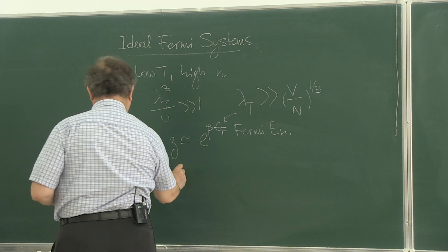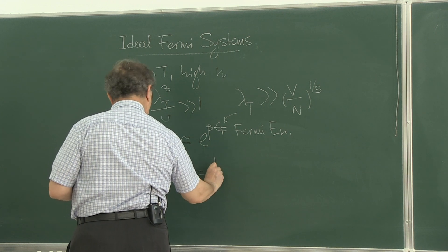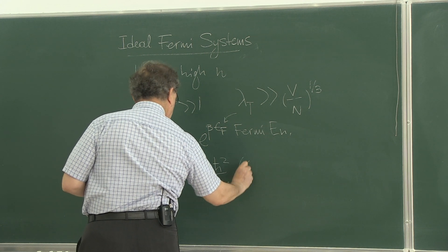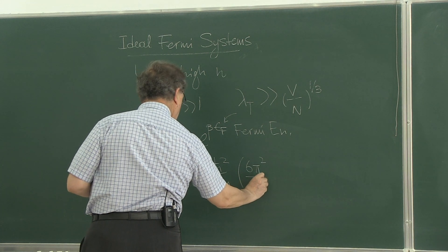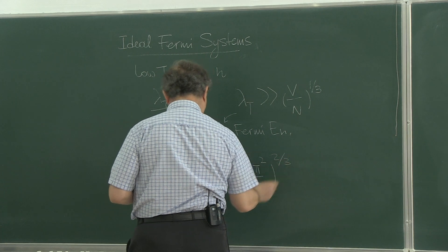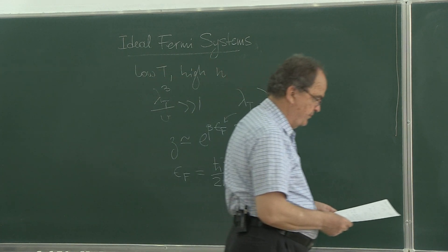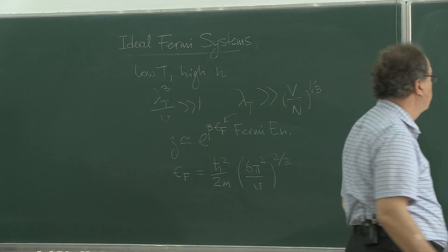And Fermi energy can be found, as I found in my notes, as h bar squared over 2m, 6 pi squared n over v.